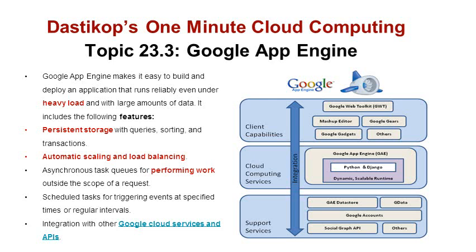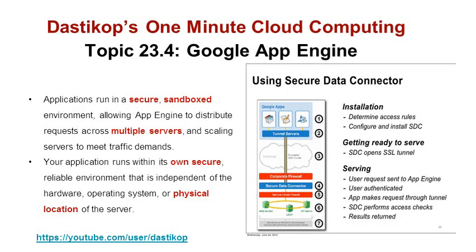In today's session we'll be talking about Google App Engine with reference to its security features. Applications in Google App Engine run in a secure sandboxed environment, allowing application instances to distribute requests across multiple servers and scale to meet traffic demands. The application running on Google App Engine has a secured environment — it is sandboxed, meaning the application is not affected by or touched by other applications.